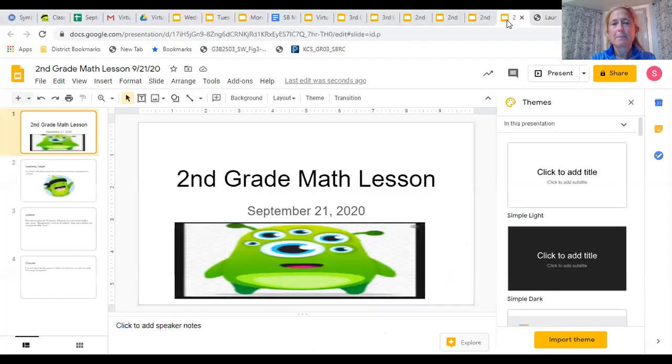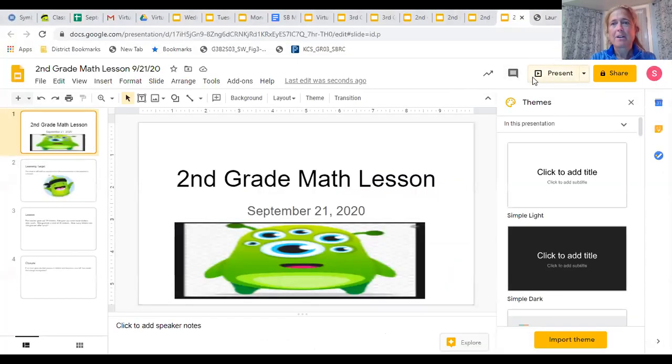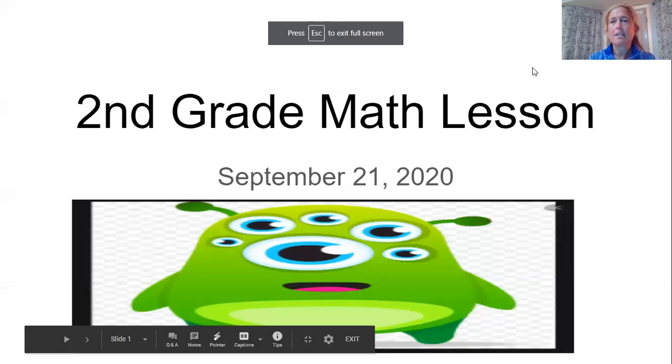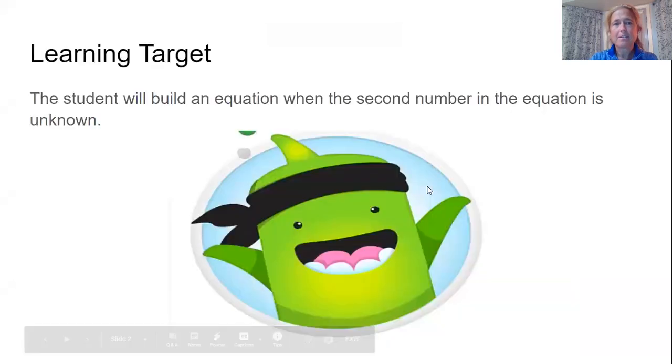I'll share my screen. Alright, so today is September 21st and this is our math lesson. Our learning target for today is the student will be able to build an equation when the second number in the equation is unknown. We've started working with this but we're going to continue to practice it today.